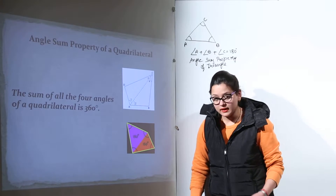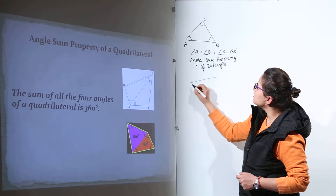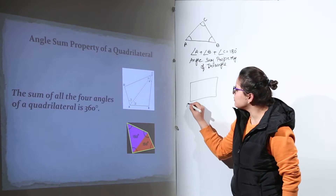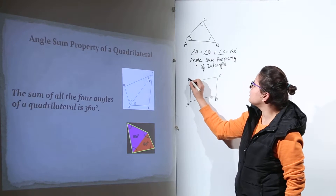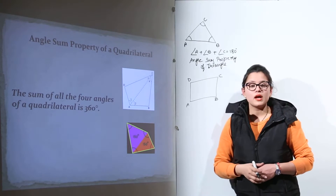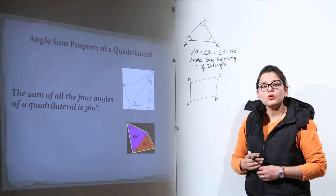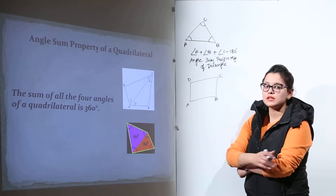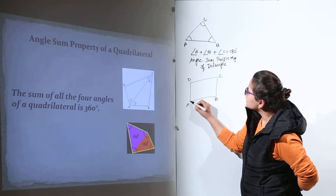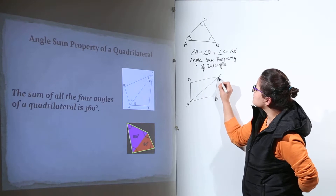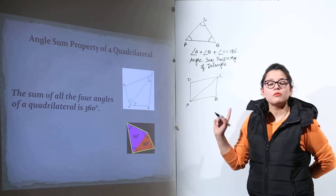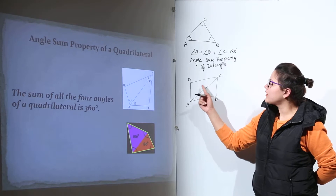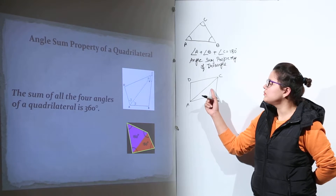Now, how can we say that? I will make a quadrilateral over here. This is one quadrilateral, and I am going to name it A, B, C and D. This quadrilateral has four sides and four angles. Now, if I join these two angles with a line — that means I am going to make a diagonal — I have divided this quadrilateral into two triangles.